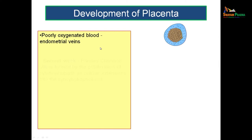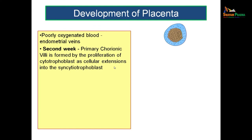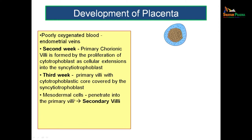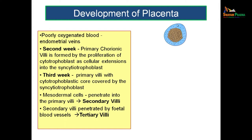By the end of the second week, primary chorionic villi form by proliferation of cytotrophoblast as cellular extensions into the syncytiotrophoblast. By the third week, mesodermal cells penetrate into the primary villi — this is known as secondary villi. A secondary villus is formed when mesodermal cells proliferate and penetrate into the primary chorionic villus, giving a mesodermal core in the center instead of just cytotrophoblast.